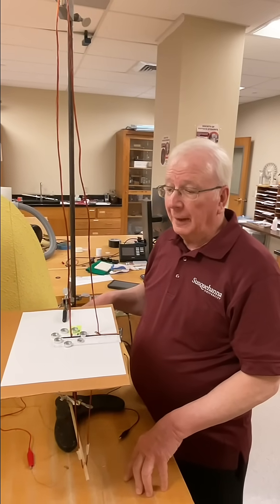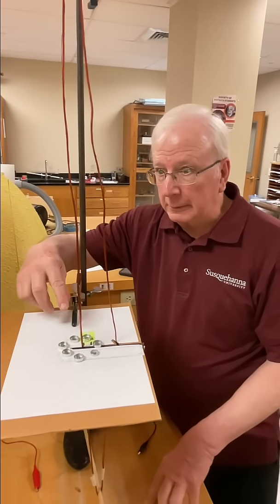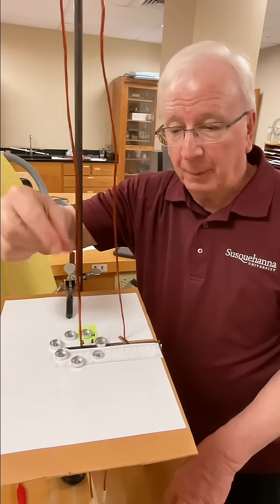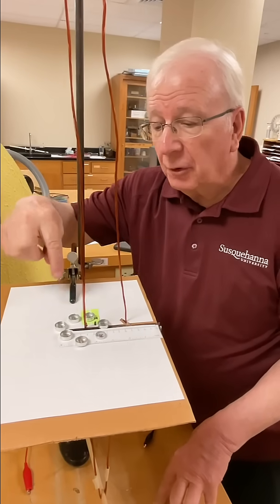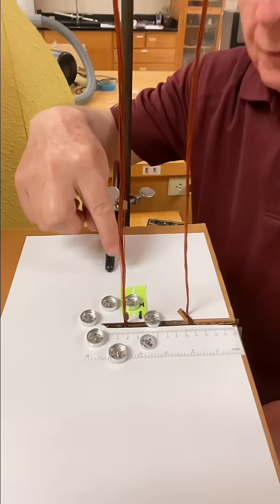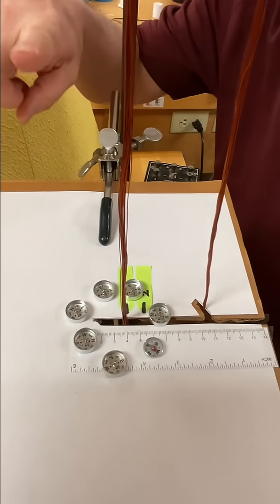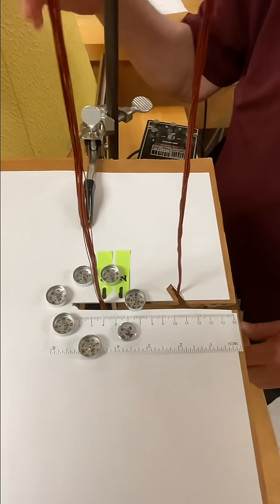With no current flowing yet, this wire is actually not producing a magnetic field. So if you look at the compass needles, they're all pointing in one direction because of the Earth's magnetic field from our location.